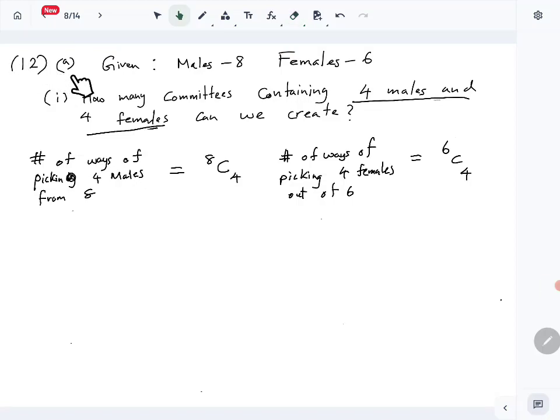Let's look at question number 12, part A. It is given that there are 8 males and 6 females, and we need to calculate the number of committees containing 4 males and 4 females.